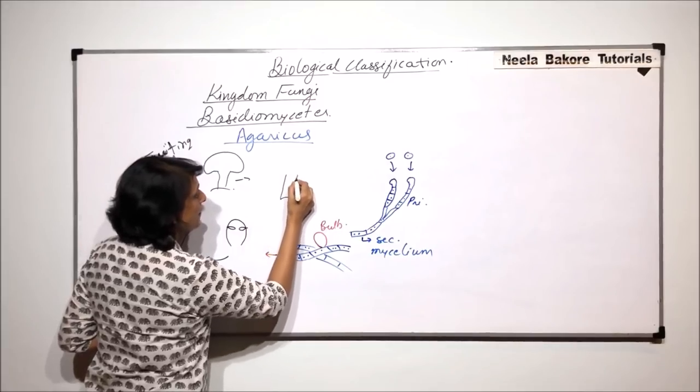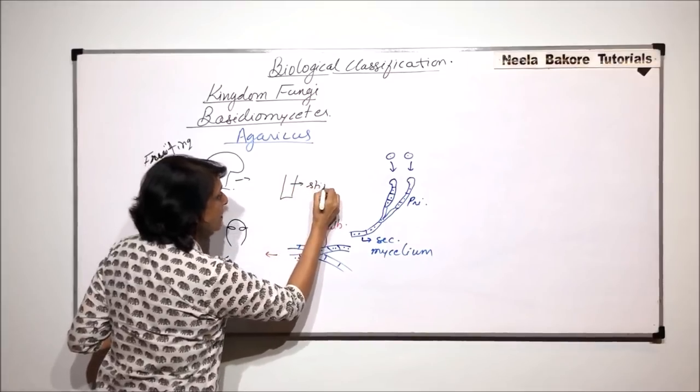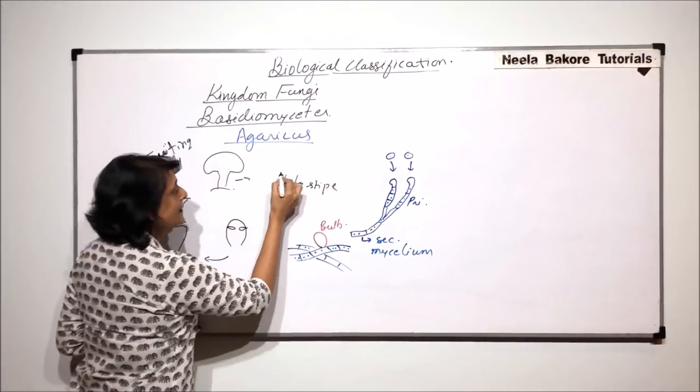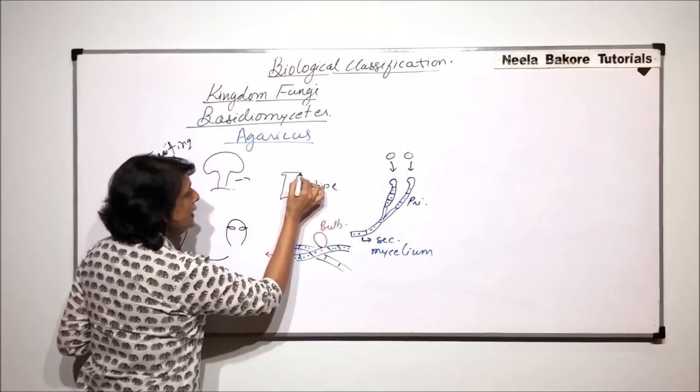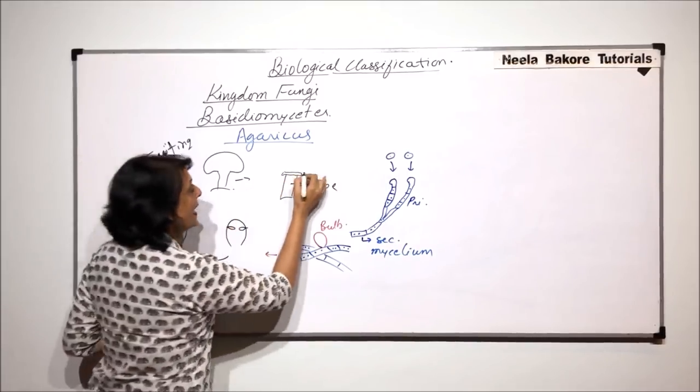What we find is, we find a stalk-like structure which is called the stipe. There is a slightly wider structure to which the umbrella-like pilus is attached.